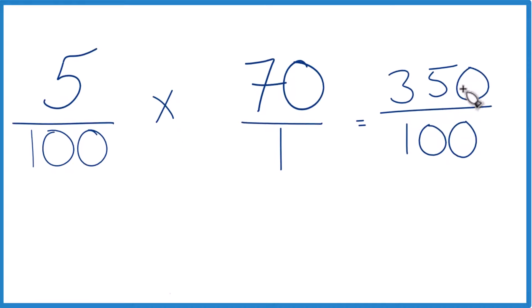And we can simplify 350 over 100. We divide the numerator and denominator by 10, we get 35 tenths. We can simplify that further as well. We can divide 5 into each number, and we would get 5 goes into 35 seven times, and it goes into 10 two times, so seven halves.